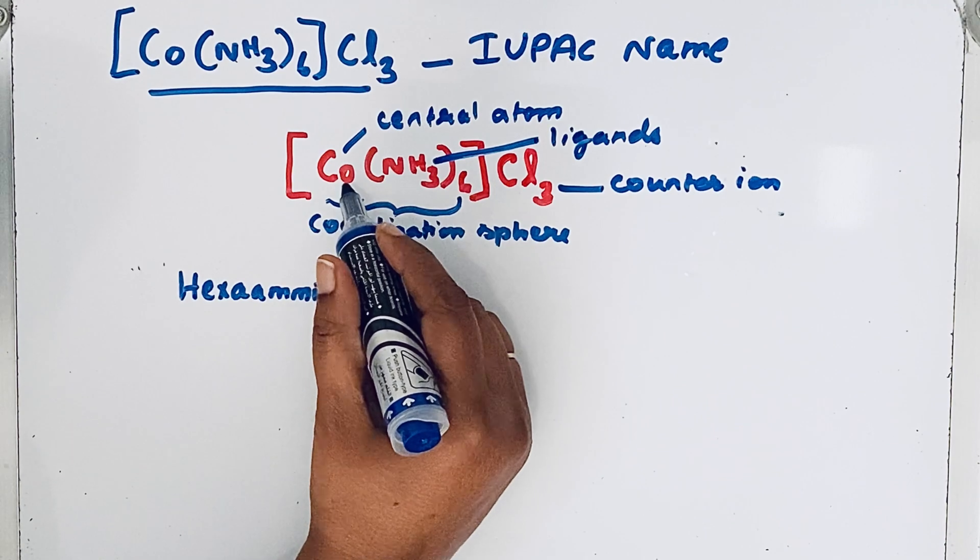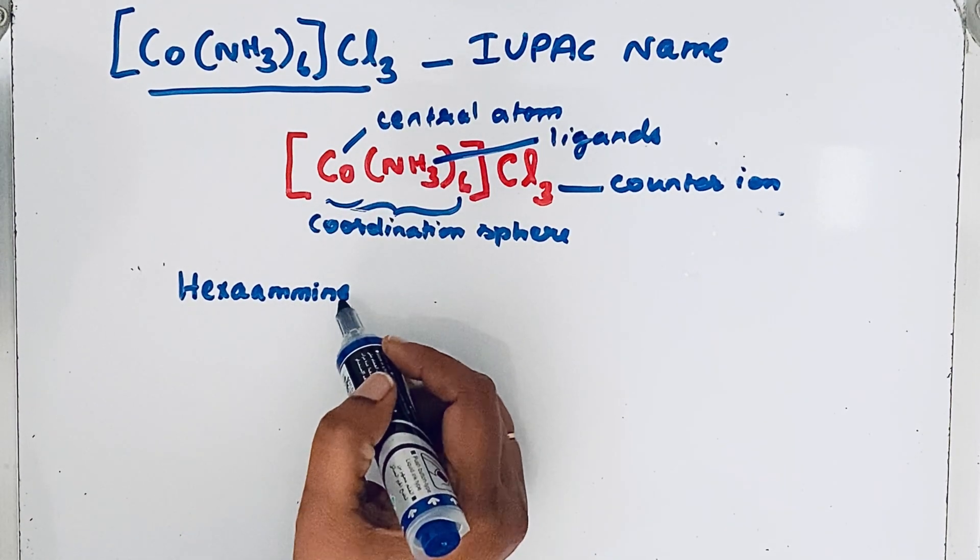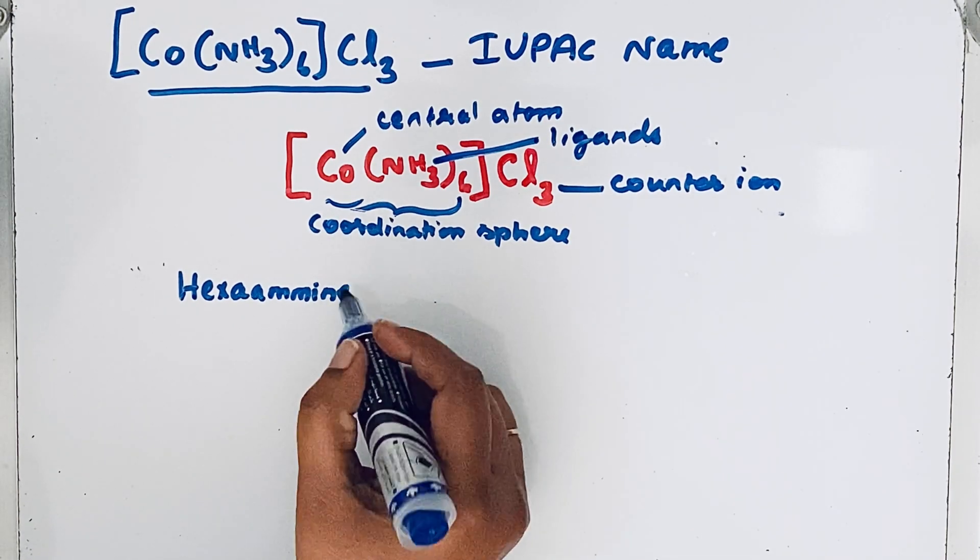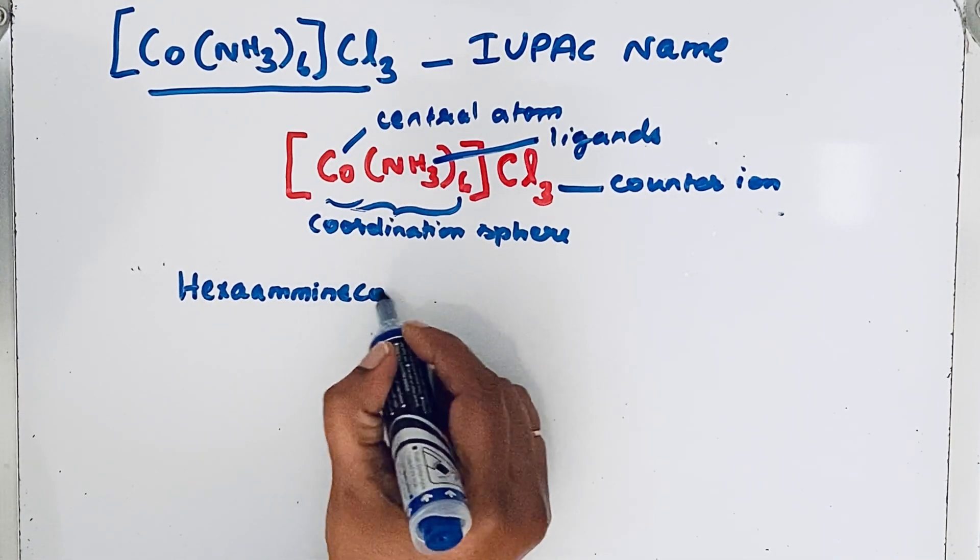Next, cobalt, the central atom. We should not leave any space between the ligands and the central atom. So, cobalt.